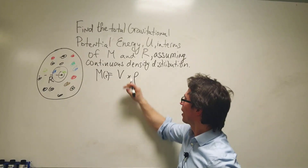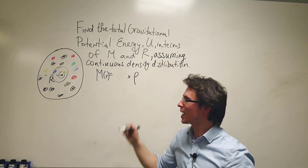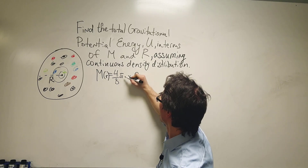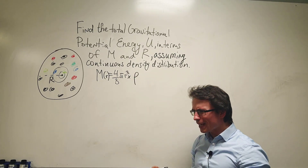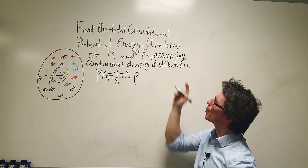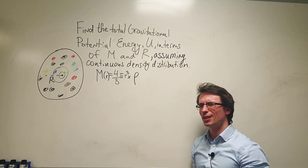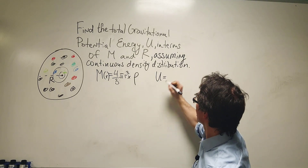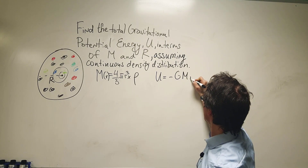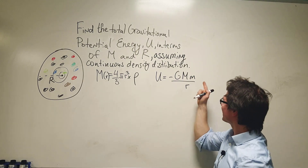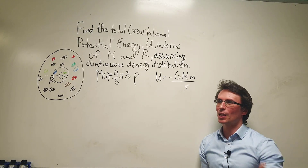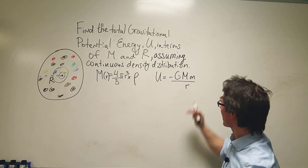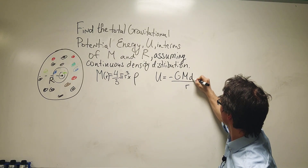How does the volume change? The volume will just be the volume of a sphere, given by (4/3)πR³. My plan for this question, in order to find the total gravitational potential energy, is to consider the formula for it, typically given the symbol U. Remember, U is −GMm/R. Rather than a small mass, because we're assuming a continuous density distribution, we'll be integrating, and I'm going to consider a tiny amount of mass, DM.